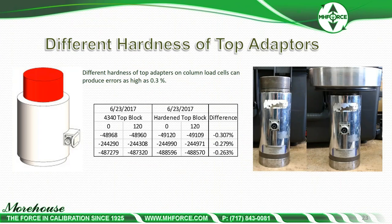Next, the picture posted on Facebook that generated good debate: different hardness of top adapters. A customer sent us a cell that shifted from one calibration to the next. We did test after test. We used our block, we used their blocks — days of tests. We found that a 4340 top block versus the hardened top block that came with the load cell produced a difference of 0.307%, just by using different top blocks on the cell. Errors of 0.15% from this source are pretty common.